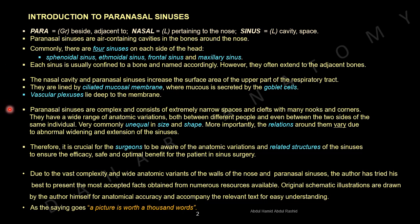Paranasal sinuses are complex and consist of extremely narrow spaces and clefts, with many nooks and corners. They have a wide range of anatomic variations, both between different people and even between the two sides of the same individual. They are very commonly unequal in size and shape, and the relations around them vary due to abnormal widening and extensions of the sinuses.